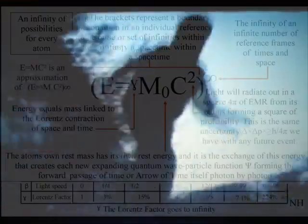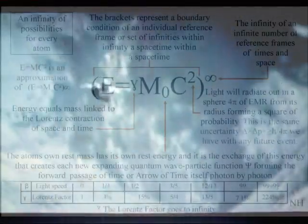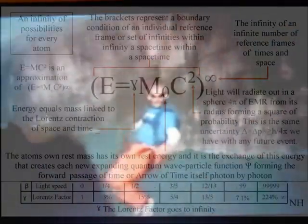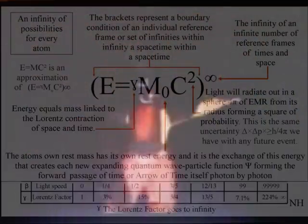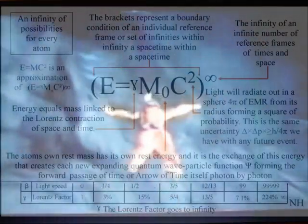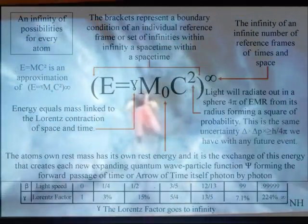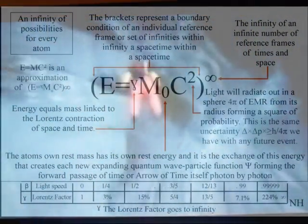So far in this video, this theory has been explained using the mathematics that we already have. Now we are going to look at the one new equation this theory is based upon. In this diagram, the Lorentz contraction of space and time is between the energy and mass. The greater the energy, the greater the time dilation and the slower time will run.